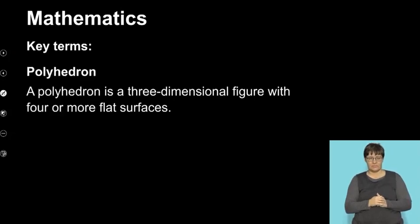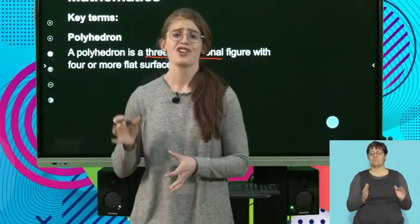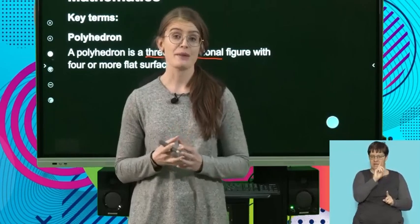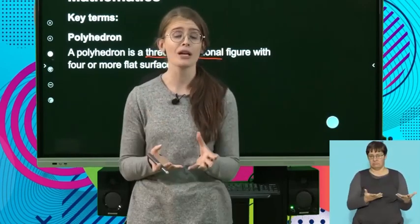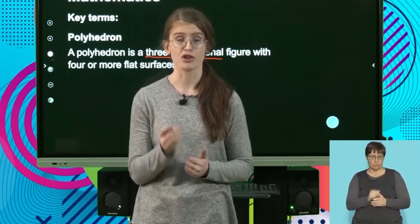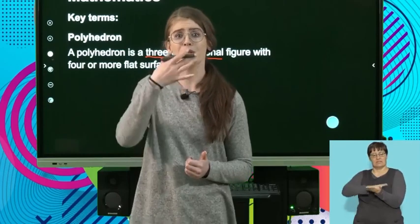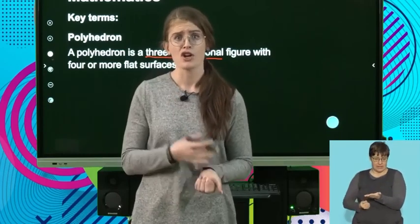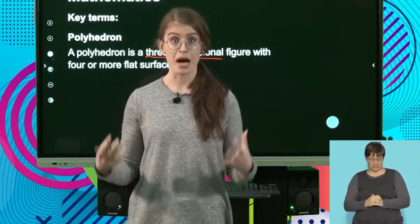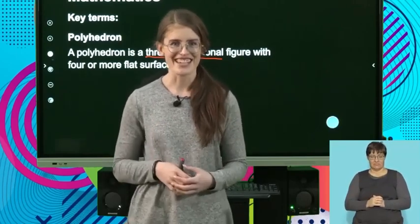A polyhedron is a three-dimensional figure with four or more flat surfaces. Just a reminder, a polyhedron is an actual three-dimensional shape. It's a shape that I could possibly hold, like a spherical ball or a box of chocolates. It's not two-dimensional because two-dimensional refers to a shape that could be drawn on a flat surface. So if I were to draw a triangle on a piece of paper, that would be a two-dimensional triangle.